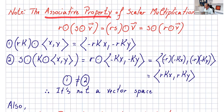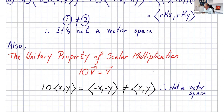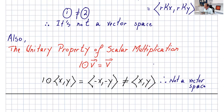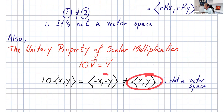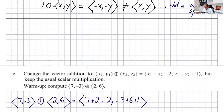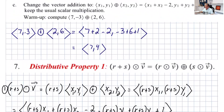Also, the unitary property of scalar multiplication fails: when you do 1 scalar v, you should just get v. In this case, 1 scalar (x, y) gives (-x, -y), and that's not the same thing as the original vector. So it's not a vector space. If one of them fails, you can just stop right there and say it's not a vector space.